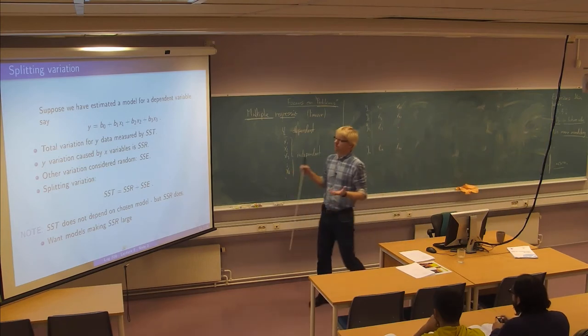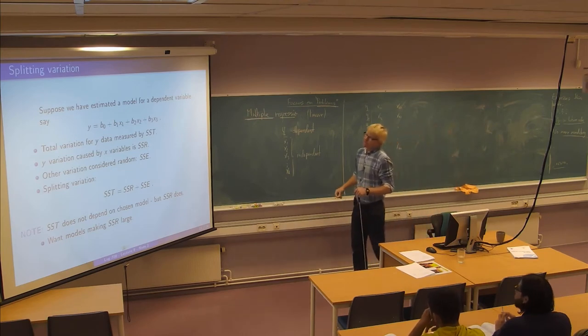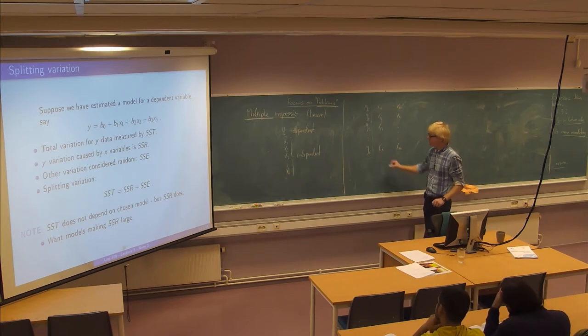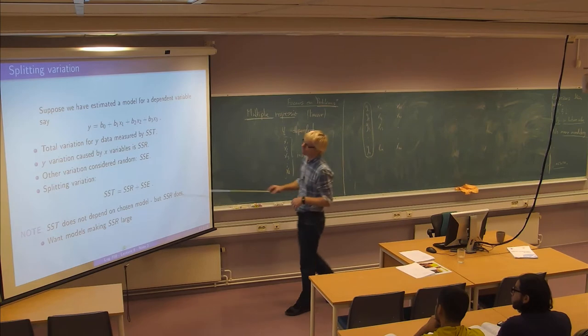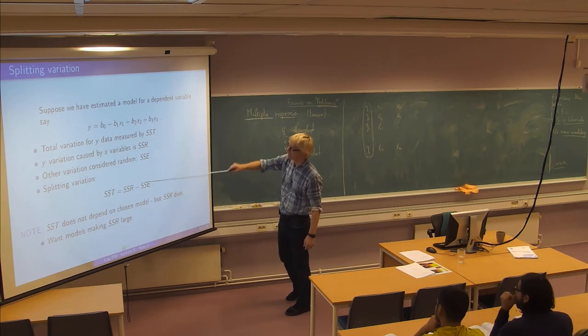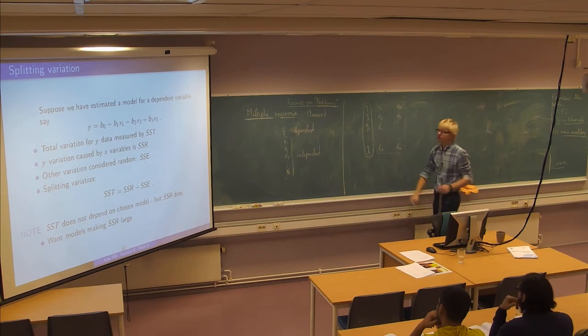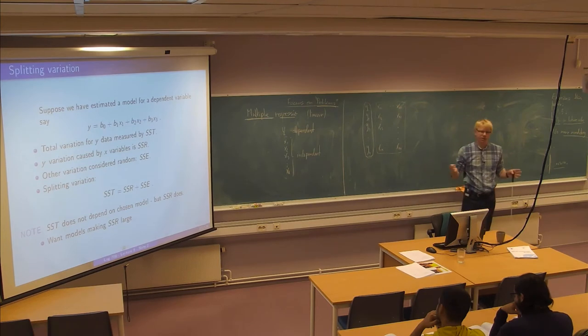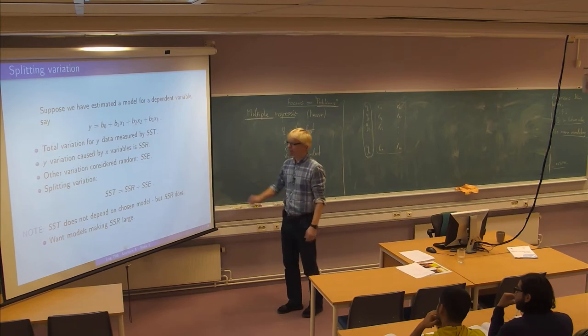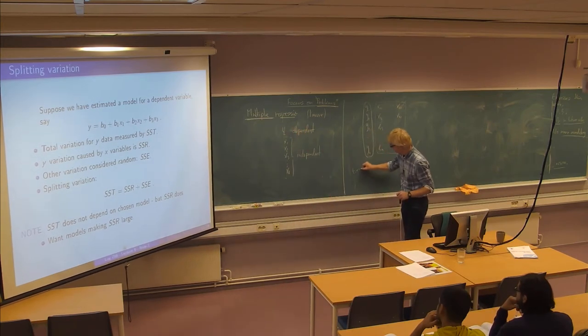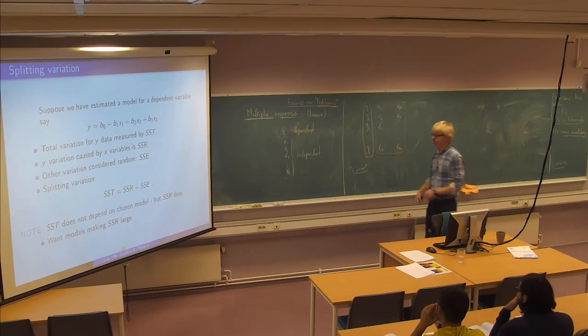The splitting of variation is designed to measure how well we can explain the variation of our y variable with the x variables basically. So we have something called the square sum for total variation which only depends on y. And then we have the two sources of variation which we can split as much as possible. We want to attribute to these variables together. We call that SSR and then the remaining part will be called just random. So it's the square sum of error.